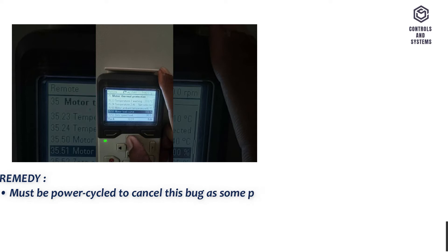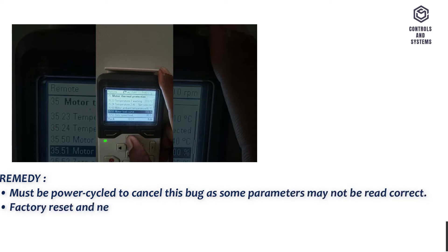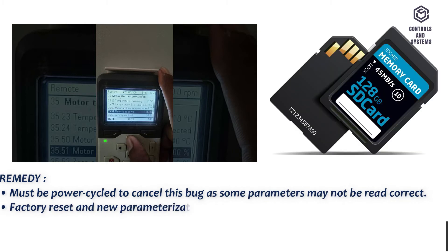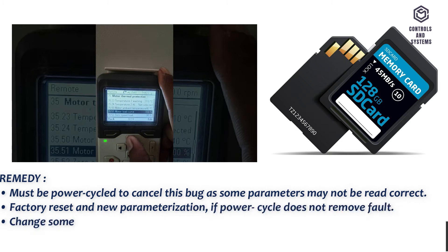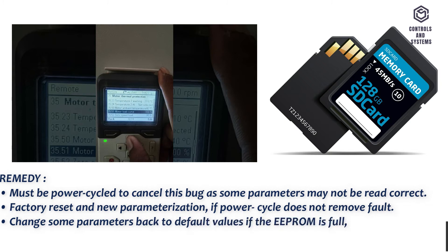Remedy: Must be power cycled to cancel this fault, as some parameters may not be read correctly. Factory reset and new parameterization if power cycle does not remove the fault. Change some parameters back to default values if the EPROM is full, then power cycle. Change inverter if necessary.